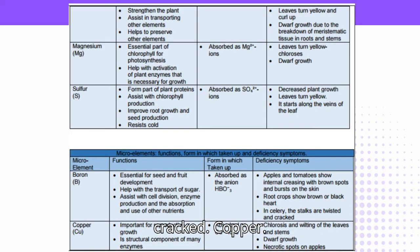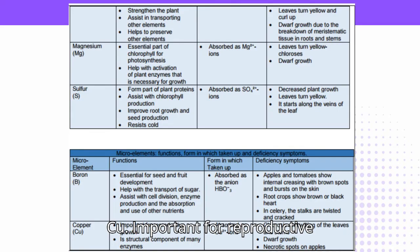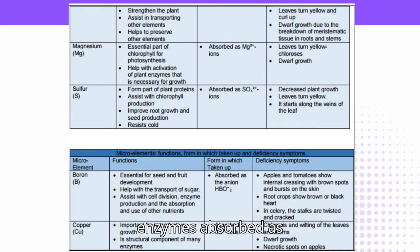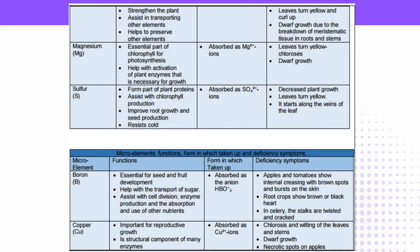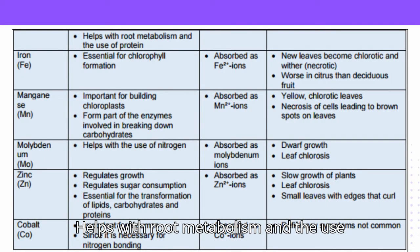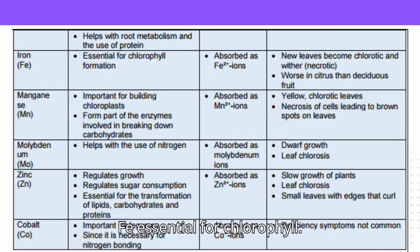Copper (Cu): Important for reproductive growth and is a structural component of many enzymes. Absorbed as Cu²⁺ ions. Deficiency symptoms: chlorosis and wilting of the leaves and stems, dwarf growth, and necrotic spots on apples. Also helps with root metabolism and the use of protein.